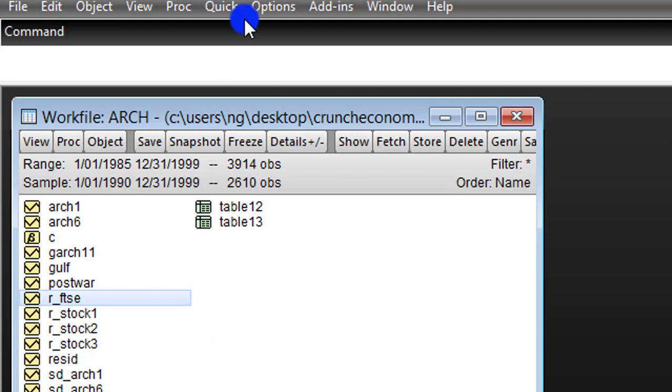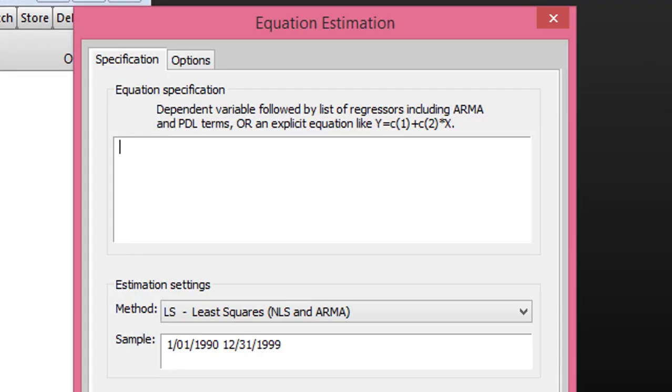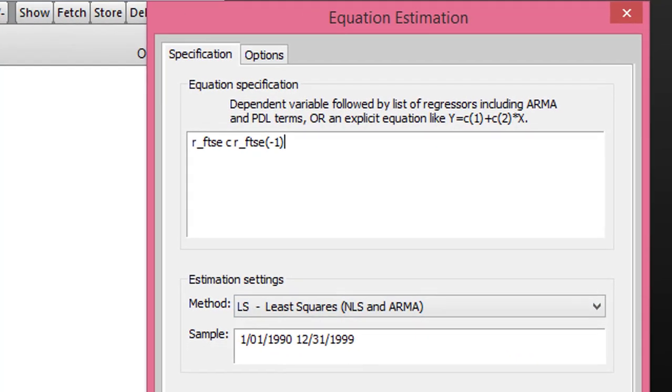To do that, we go to Quick, click on Estimate Equation, and type in the AR(1) model: constant and include the lag of the variable. So I've specified an AR(1) model here - the dependent variable, constant, and one lag of the dependent variable. The method here is least squares. We're not changing anything. Click OK.